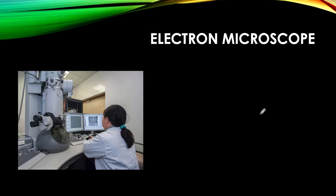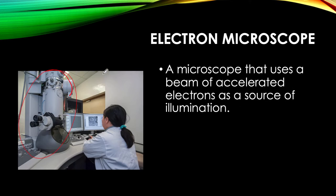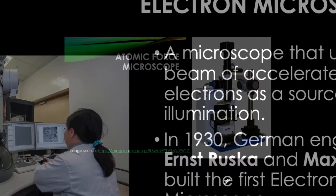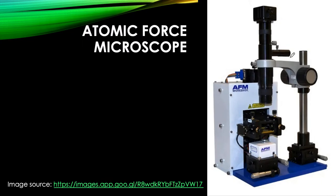First up is the electron microscope. This is a microscope that uses a beam of accelerated electrons as a source of illumination so that we can see at the nanoscale. In 1930, the German engineers Ernst Ruska and Max Knoll built the first electron microscope — one of the key tools for seeing in the nanoworld.